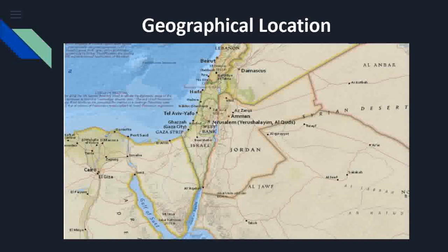Here on the map you can see Israel is surrounded by Lebanon in the north, Syria and Jordan in the east, Egypt in the southwest, and the Mediterranean Sea in the west. The green patches in the western side of Israel experience Mediterranean type of climate, whereas the southern part is the desert region. Mediterranean climate means it receives rainfall during winter season and the summer is usually long and very harsh.